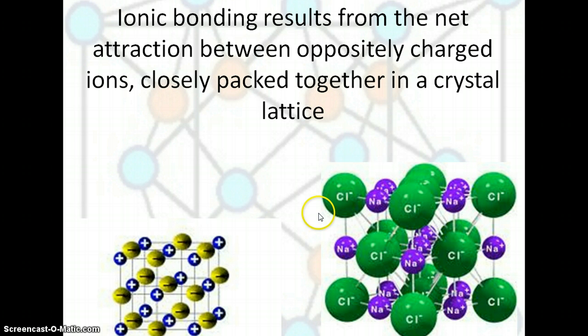A crystal lattice where the positive and negatives alternate with one another, so that the negative is closely surrounded by positive ions, and the positive ion is closely surrounded by negative ions. So, here's some pictures of that.